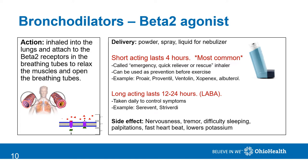Beta-2 agonists can be delivered through powders, sprays, or liquids for the nebulizer. They come in short- and long-acting forms. The short-acting lasts about four hours and is the most common. Some people refer to short-acting beta-2 agonists as emergency or quick relievers or rescue inhalers. Common rescue inhalers are Pro-Air, ProVentil, Ventolin, or Xopenex. Albuterol liquid can be used in a nebulizer. These can also be used as prevention prior to exercise.